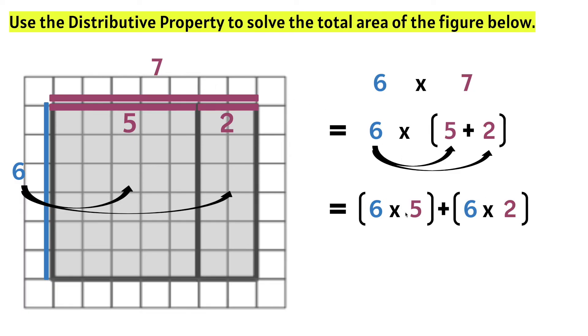Now six times five. We can either count all of these units here. Or we know that six times five is 30. And we can add six times two. If we count these up, we have 12. And we know that 30 plus 12 is 42. So we can say that the total area of this figure is 42 square units.